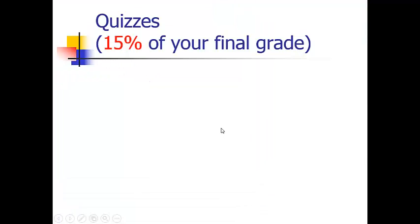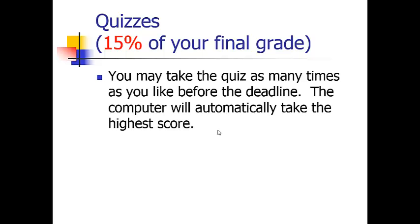Quizzes are also 15% of your final grade. You may take the quiz as many times as you like before the deadline, and the computer will automatically take the highest score. Pay attention to how the computer wants the answers entered. The difference between homework and quiz questions is that there are no help buttons for quiz questions. Also, to improve your score in homework you can rework missed problems only, but to improve a quiz score you must retake the entire quiz.